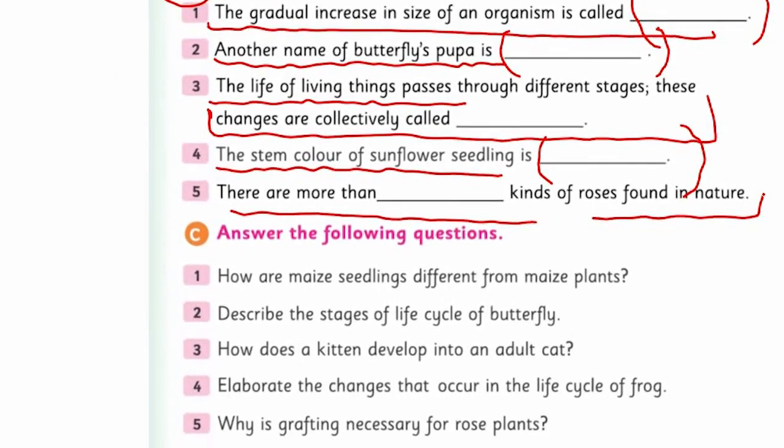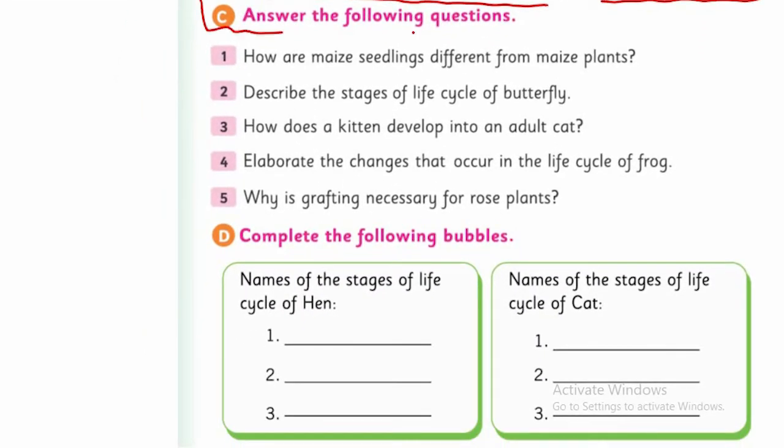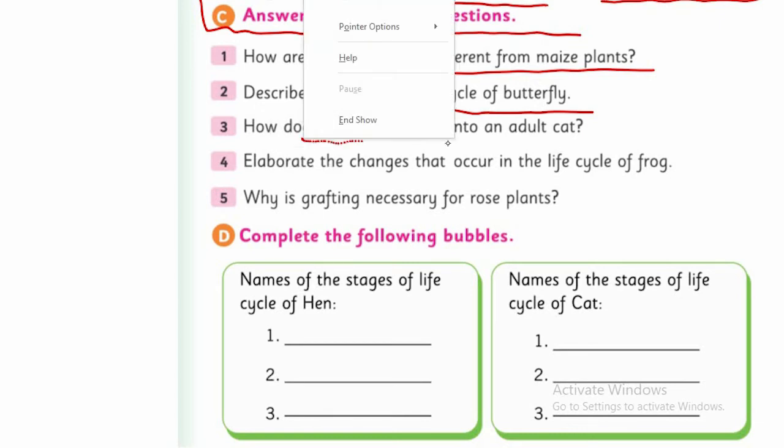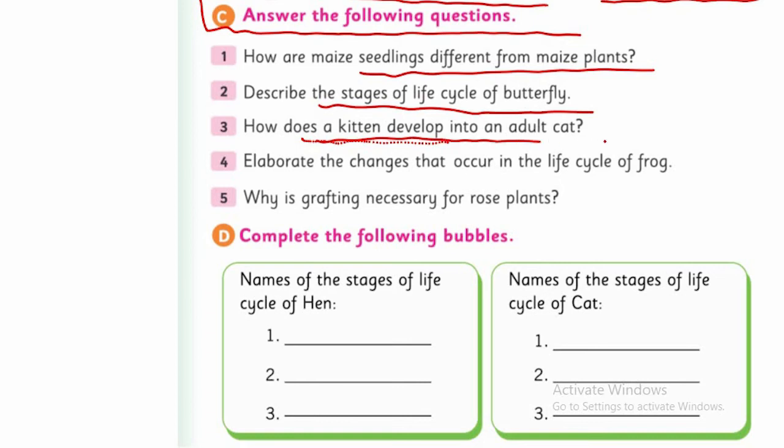Coming towards short questions, you need to give answers. Question one: How are maize seedlings different from maize plants? These are the same differences - what's common between young ones and adults, what's different? You performed this activity too, so I'm sure you can do it. Question two: Describe the stages of life cycle of butterfly.